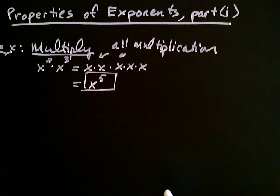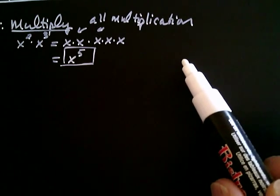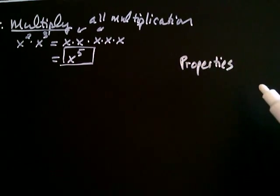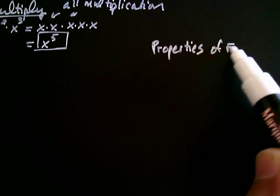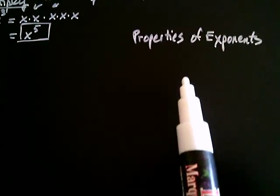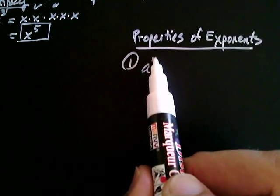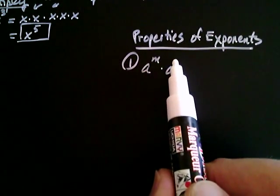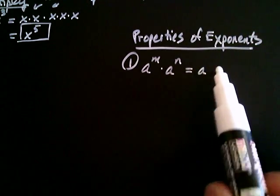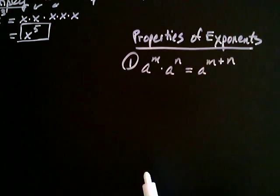We're going to create a little collection of properties for exponents. Properties of exponents. We just met the first property: if you have a raised to the m and you multiply it by a raised to the n, because they have the same base and it's multiplication, you keep the common base a and you add the exponents. So it's a to the m plus n. That's our first property.